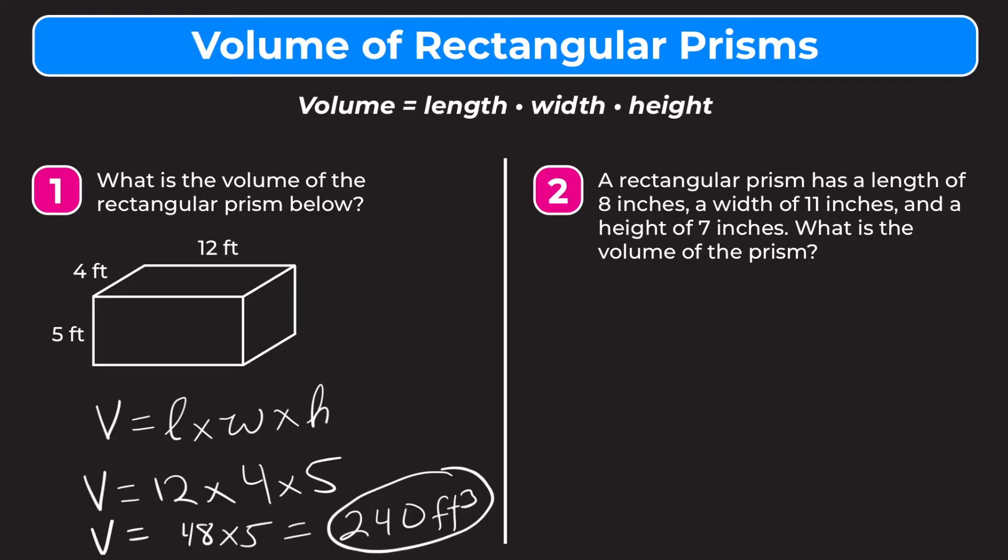So you can just put those straight into the formula. So again, if we write our formula, we have V equals length times width times height. So now let's sub in our values. So it says in the problem, this prism has a length of 8. So 8 inches times a width of 11 inches and a height of 7 inches.